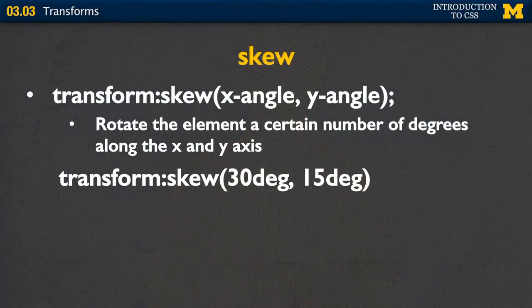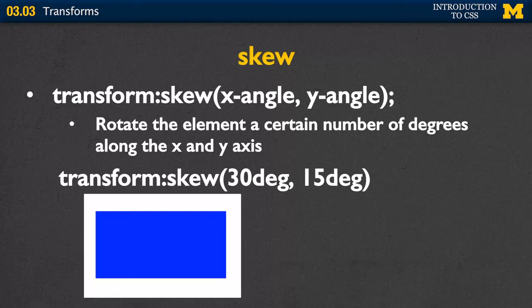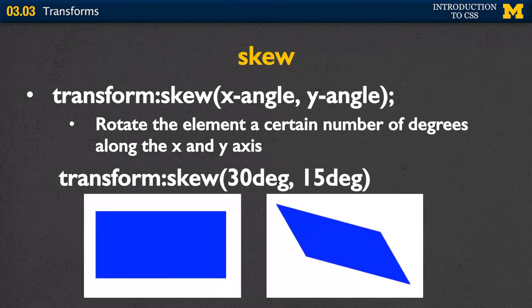Skew is hard to explain and I always forget my left and right when looking at the camera, so you'll want to play with this one and look at some examples. What you're doing is rotating the element a certain number of degrees around the x angle and a certain number of degrees around the y angle. Here I'm showing a skew of 30 degrees by 15 degrees — you start here and end up turned at a very odd angle.